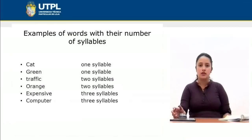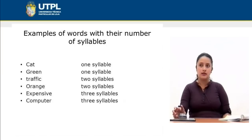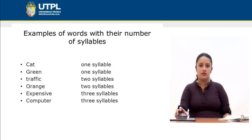Here we have some examples of words with a number of syllables. We have a one-syllable word: cat. Green is also one syllable. Then we have two examples of two syllables: traffic, orange. And three-syllable examples: expensive and computer.